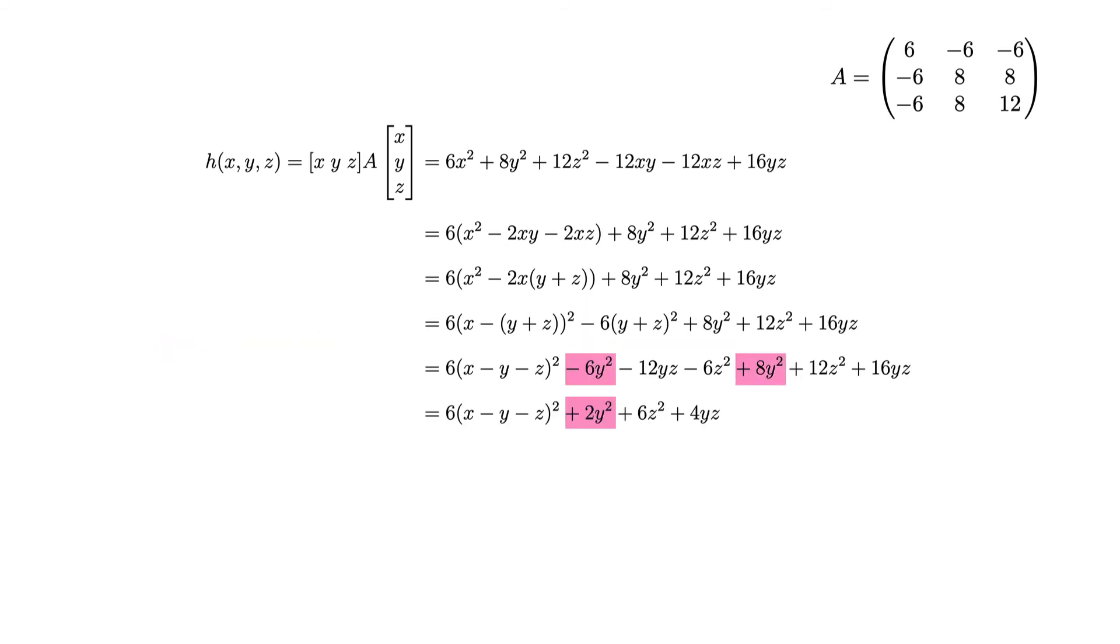What I do now, I apply here the formula for the square of sum. Don't forget to multiply everything here by minus 6. So this is why you get minus 6, minus 12, and minus 6. In the next step, I just add similar terms. Here I get these two terms are similar, so they add together to plus 2y squared. These two terms are also similar, and they add together to plus 6z squared. These add together to plus 4yz, because 16 minus 12 is 4.